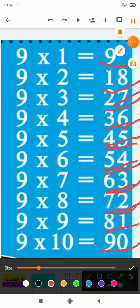Children, you have to repeat after me. Okay, let's start: 9 times 1 is 9, 9 times 2 is 18, 9 times 3 is 27.